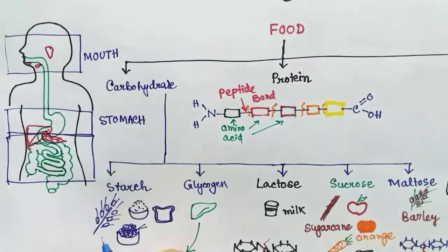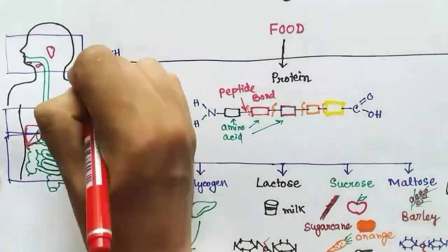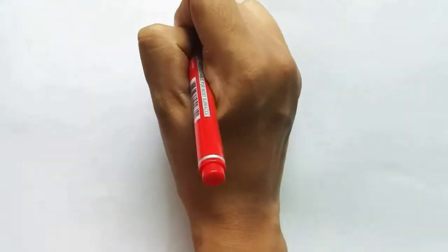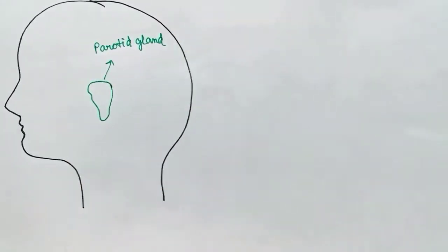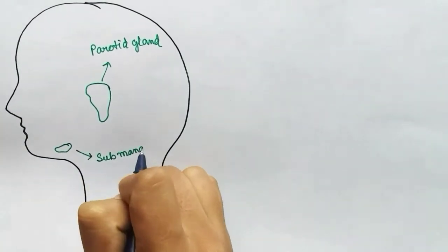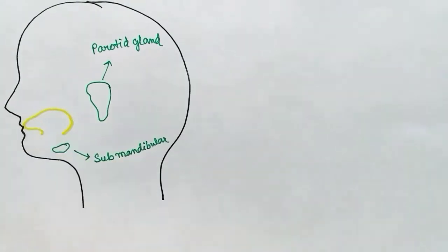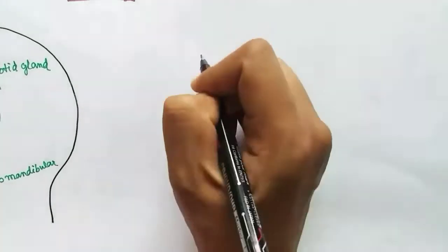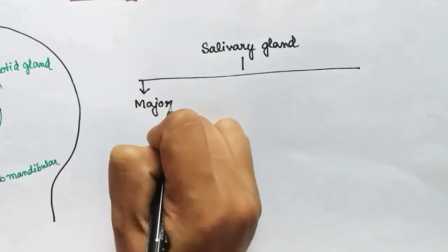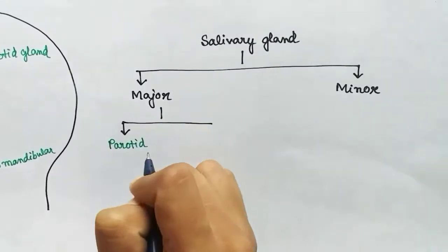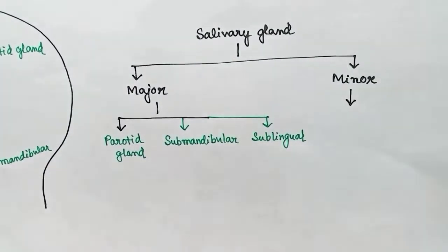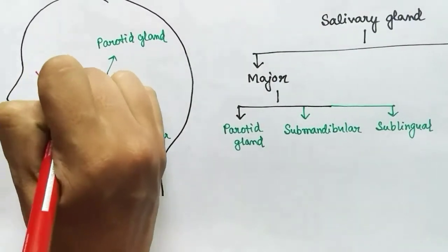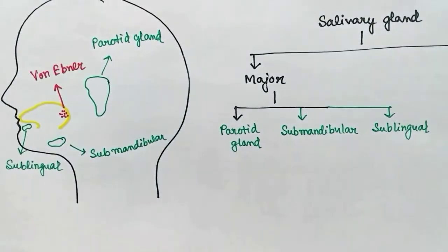There are some glands, enzymes, and organs involved in digestion. We divide the whole digestive system into three parts: mouth, stomach, and intestine. Starting with the mouth — we will zoom into the mouth section and understand the glands and the enzymes released from them. The most important glands of the mouth are the salivary glands. There are two types: major and minor salivary glands. The three pairs of major salivary glands are the parotid gland, submandibular gland, and sublingual gland. The minor salivary glands are found all over the mouth; one significant minor salivary gland is the von Ebner's gland, which is present towards the back side of the tongue.